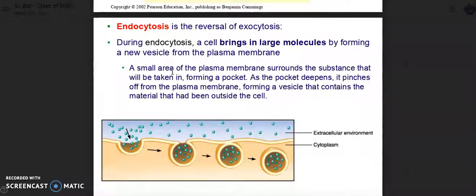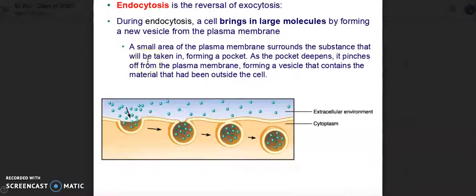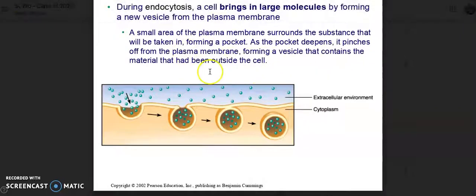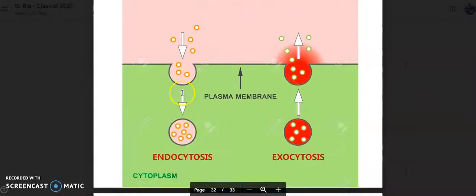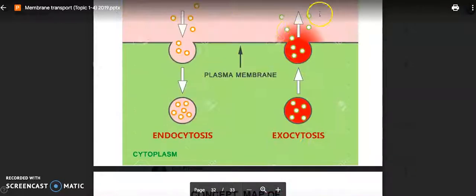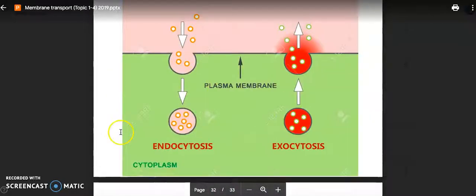Endocytosis is the reverse process of exocytosis. During endocytosis, a cell brings in a large molecule by forming a new vesicle from the plasma membrane. A small area of the plasma membrane surrounds the substance that will be taken in, forming a pocket. As the pocket deepens, it pinches off from the plasma membrane, forming a vesicle that contains material that has been brought from outside of the cell. The vesicles always stay within the cytoplasm.